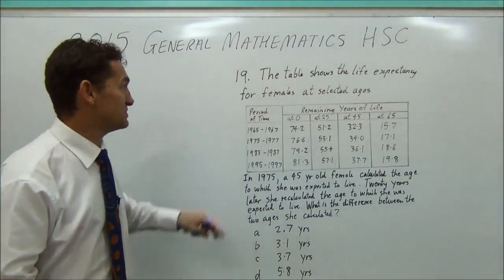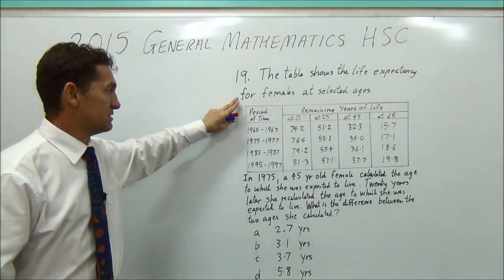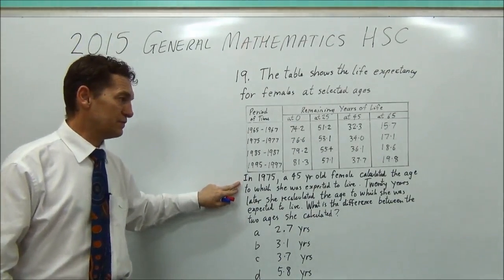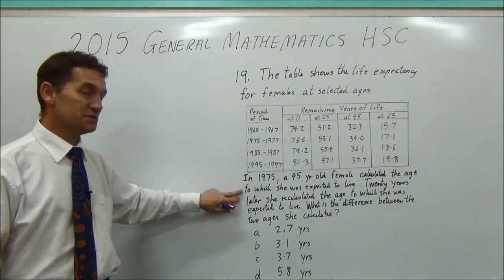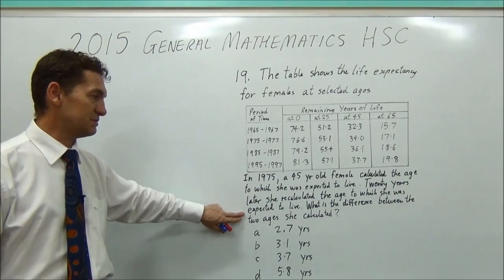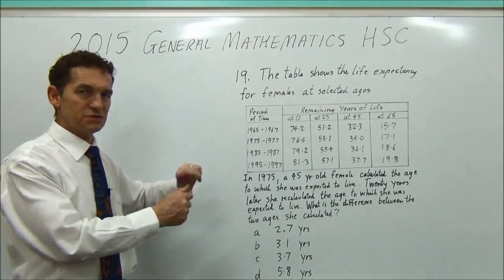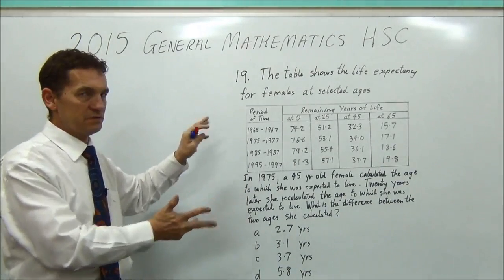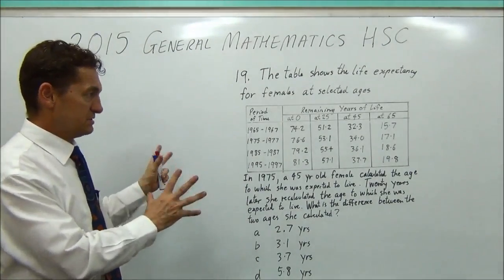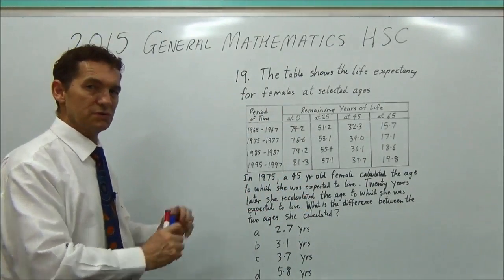Back again, question 19. The table shows the life expectancy for females at selected ages. And it gives you this table. In 1975, a 45-year-old female calculated the age to which she was expected to live. Twenty years later, she recalculated the age to which she was expected to live. What is the difference between the two ages she calculated? So when you first look at the question on the paper, there's quite a lot of it. So you may think, oh, this is quite difficult. It's not really, but it does present as a challenging question because there's a lot of information there, not a small two-line question.